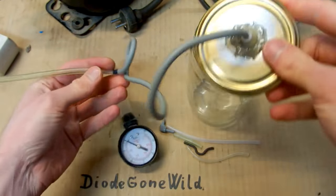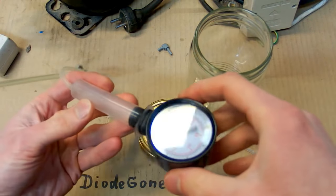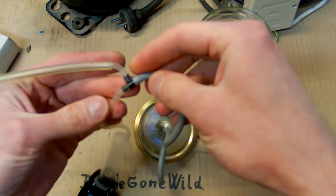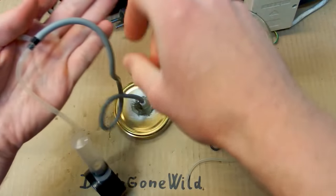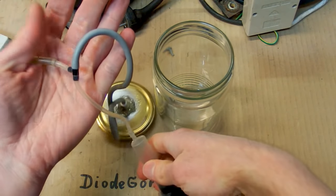And there are some random hoses and a vacuum gauge. There is a splitter which is useful because I have to connect a vacuum chamber and the vacuum gauge at the same time to my pump.